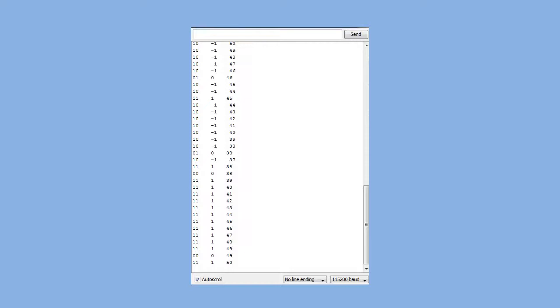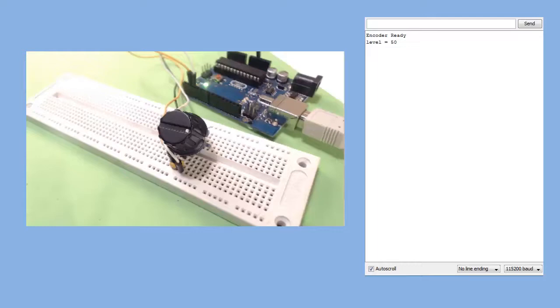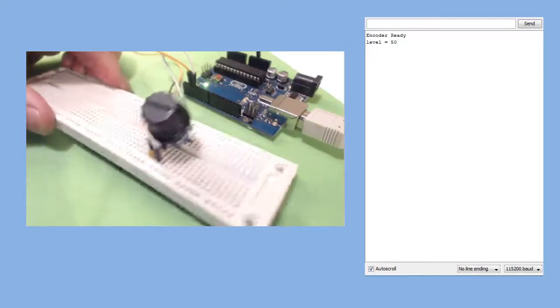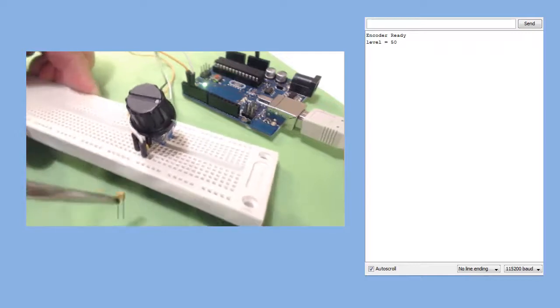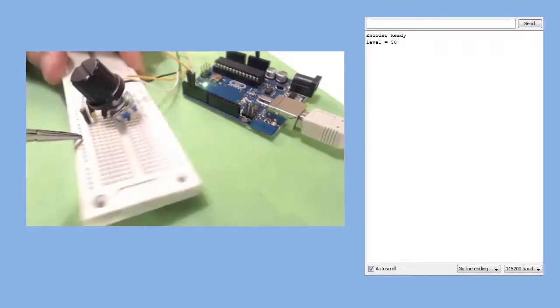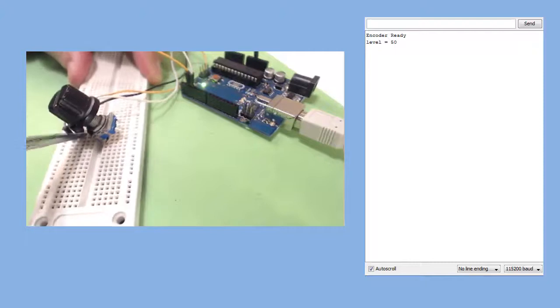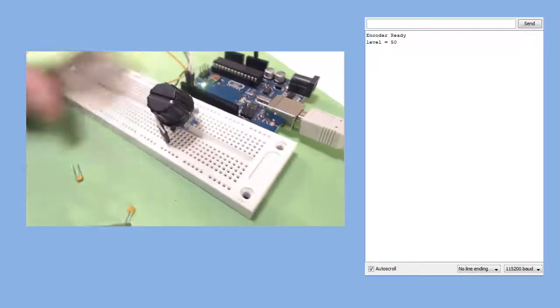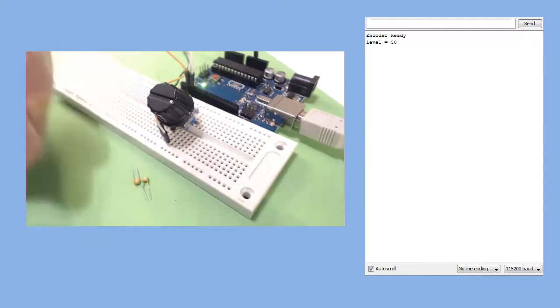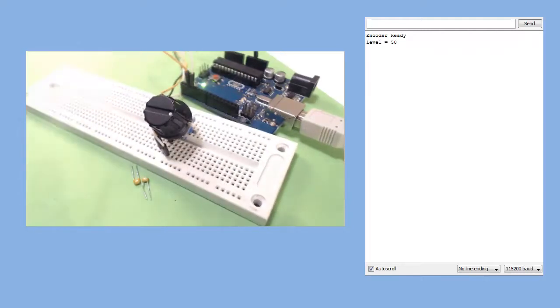What about those capacitors we put on the board? Are they really doing anything? Let's find out. Okay, so let's take these two capacitors off of our breadboard. There's one. Two. The capacitors are now out of the circuit.